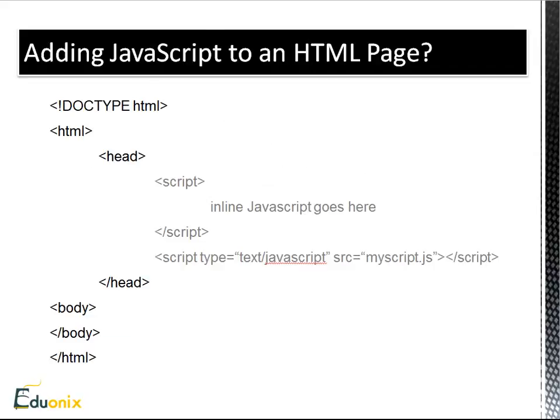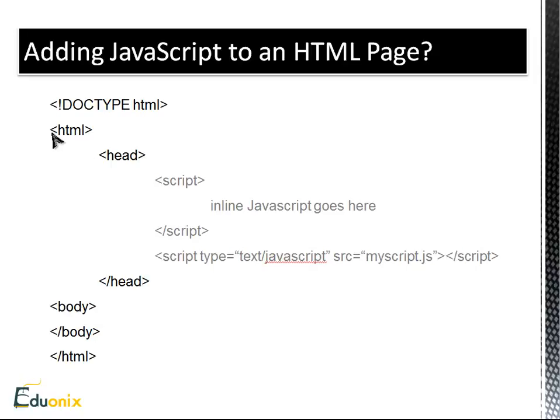So adding JavaScript to an HTML page is fairly easy. You can see we have a basic HTML structure. We have our HTML head body tags and you can see that within the head tags we have these script tags and this is where we would put our inline JavaScript. So by inline I mean that we're putting it right in the HTML page as opposed to in a JavaScript file. So we can do that as long as we have our opening and close script tags and we include all the JavaScript in the middle.